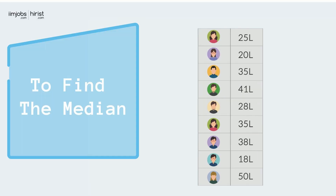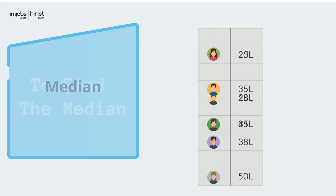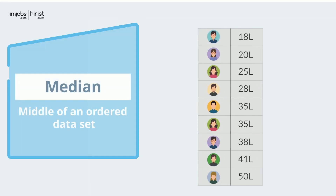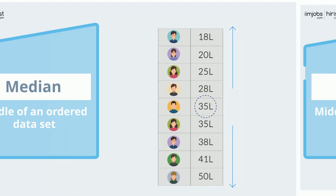To find the median, first put the salaries in ascending order. We can see that the salary of 35 lakhs is in the middle of the data set, because there are four data points above it and four data points below it.